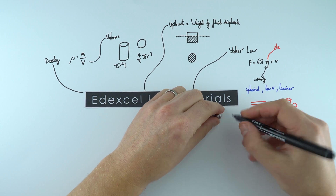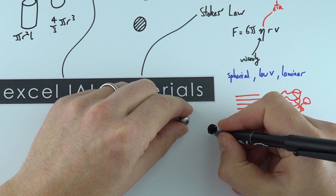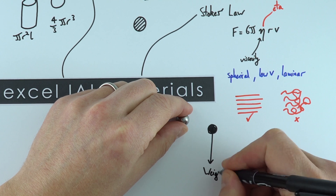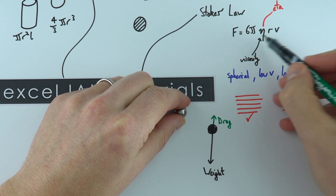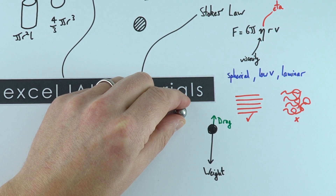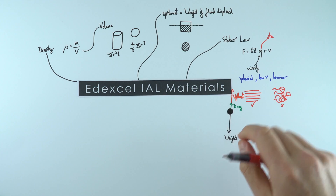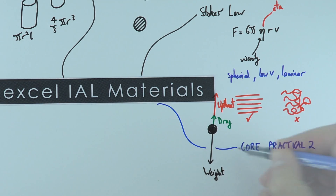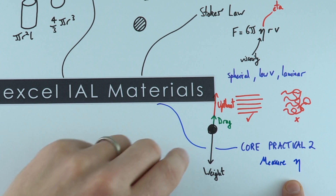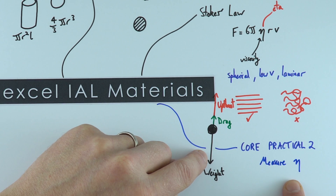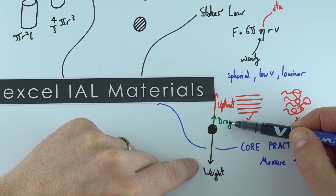Imagine we've dropped a ball bearing through a fluid. There are forces acting on it: a force acting down due to the weight of the object, a drag force acting against it (which we can work out using Stokes' law), and also the upthrust, equal to the weight of fluid displaced. This leads on to core practical two, where you measure the viscosity of a liquid by dropping a ball bearing through a fluid and letting it reach terminal velocity. At terminal velocity there's no resultant force, so the weight force equals the drag force plus the upthrust.